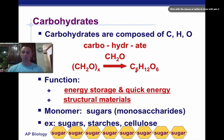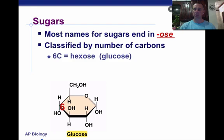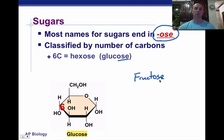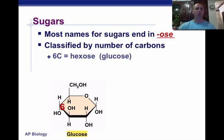The monomer of carbohydrates is a monosaccharide — mono means one, saccharide means sugar. So a single sugar makes up a monomer, and the monomer makes up carbohydrates. You put a bunch of sugars together to make something like a starch or cellulose. One thing you need to know is that sugars almost always end in the -ose ending. So if you see glucose or fructose, you know it's a sugar, and if it's a sugar, it's a carb. They're also grouped by the number of carbons they have — this glucose molecule has six carbons and is a hexose sugar.